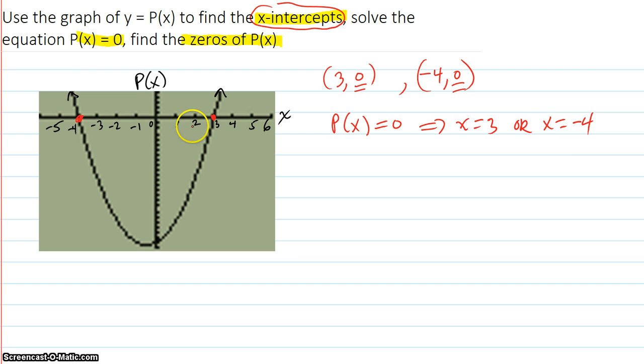No other x-coordinate pairs with zero. It doesn't cross anywhere else on this line here. Those are the only places.